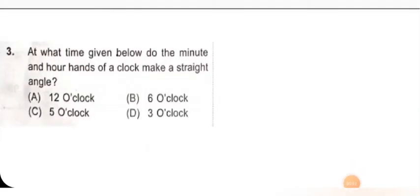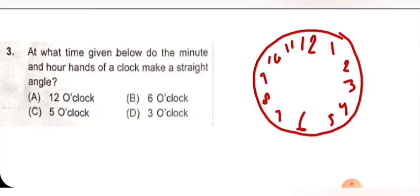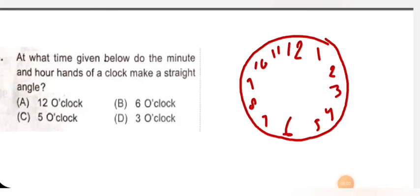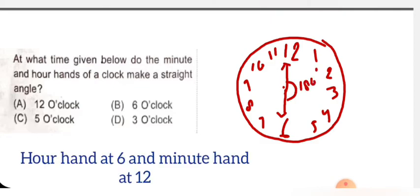Next question: at what time do the minute and hour hands of the clock make a straight angle? Straight angle means 180 degree. At 12 o'clock, the hour and minute hands are both at the same position, so that is not a straight angle — that is wrong. At 6 o'clock, the hour hand is at 6 and the minute hand is at 12, so the angle between these two hands is 180 degree, which means straight angle. Option B is correct for this.